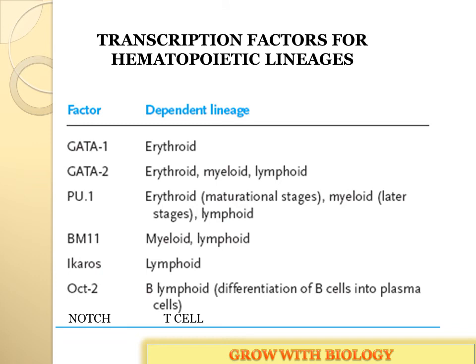Looking a step ahead in hematopoiesis — the natural process — there are some transcription factors involved. When cells are synthesized, there is a genetic makeup within them, and these factors help in synthesizing or enhancing properties for specific varieties of cells. GATA1 is required specifically for erythrocyte cells — that is, erythrocytes and platelets. GATA2 is for all varieties of hematopoietic cells: erythrocyte lineage, myeloid lineage, and lymphoid lineage.